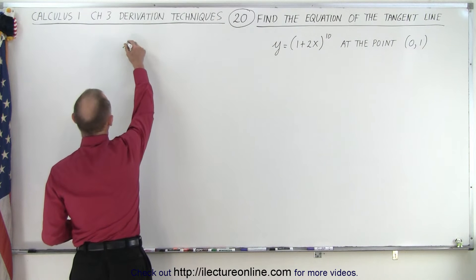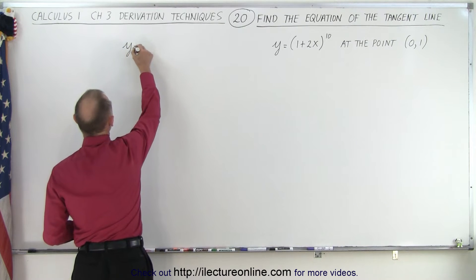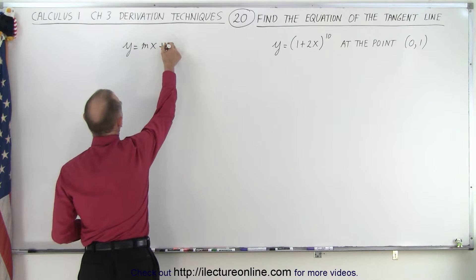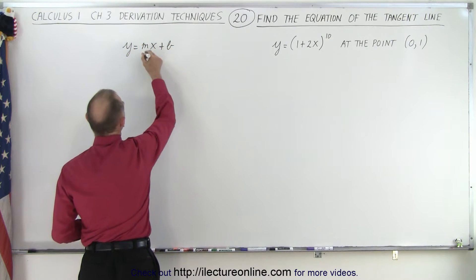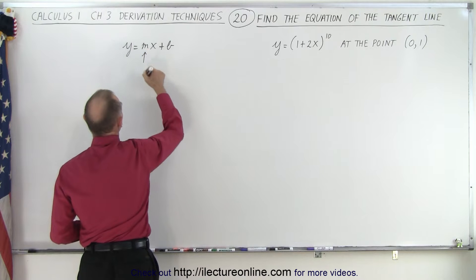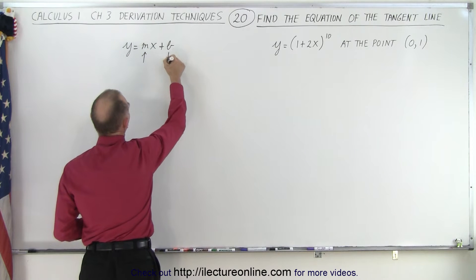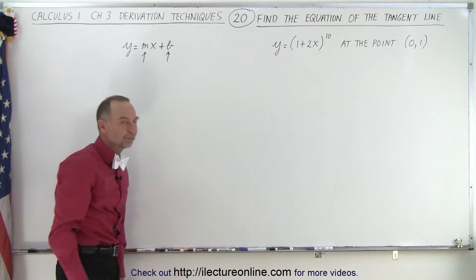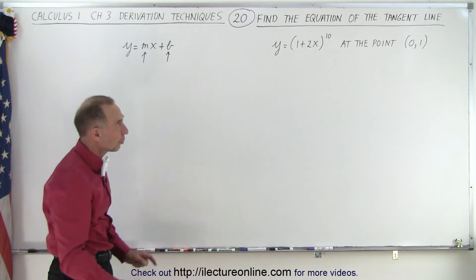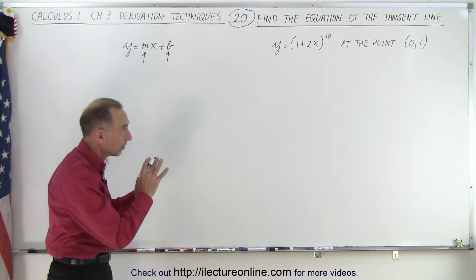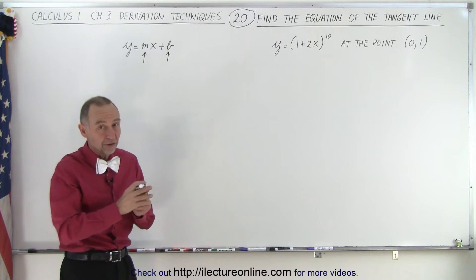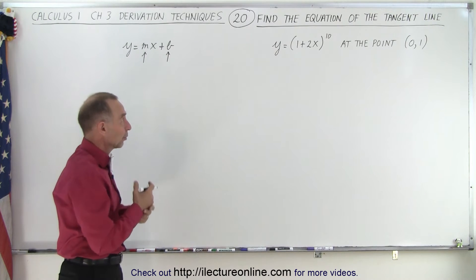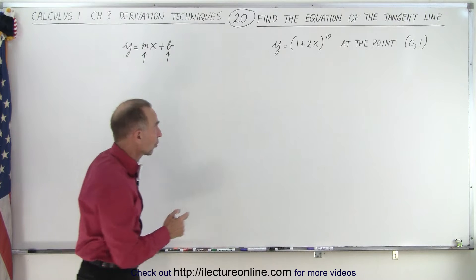you need to find the equation y equals mx plus b, which means we need to find the slope and we need to find the y-intercept. So first we're going to find the slope, because essentially the derivative of the function equals the slope.